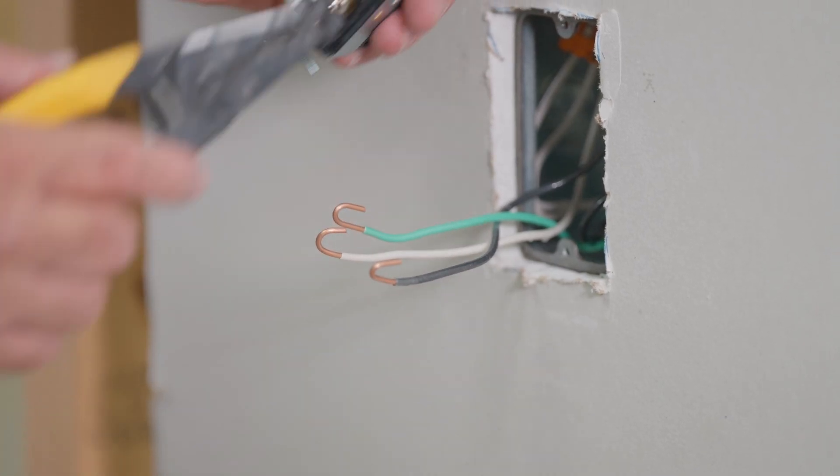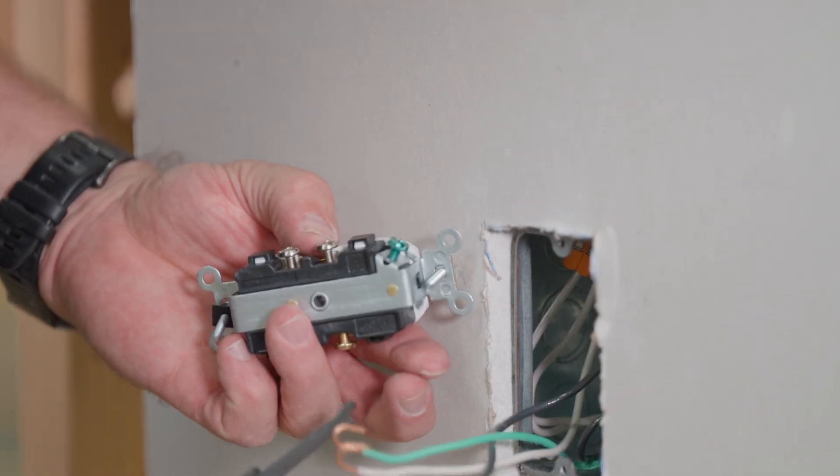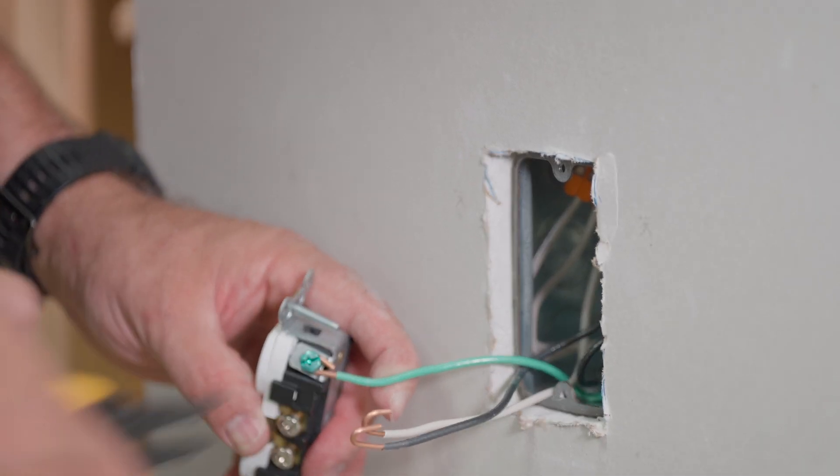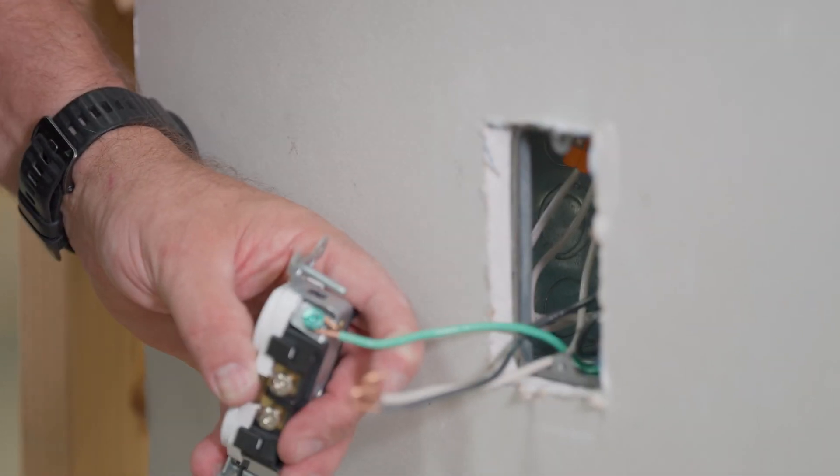All right, we'll attach the ground wire. This is the green ground, goes right here on this side. Green ground is unmistakable, right? And then what we'll do is we'll tighten it on using a drill.